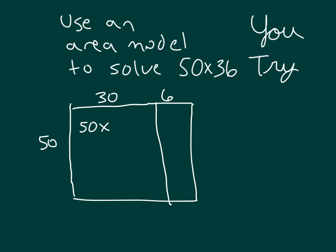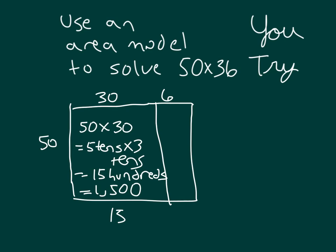What would you multiply together for each of these partial products? Here it would be 50 times 30, which equals 5 tens times 3 tens, which equals 15 hundreds. Remember tens times tens does give you hundreds, which is written as 1,500. So one of the partial products is 1,500.